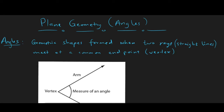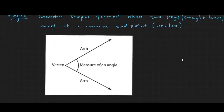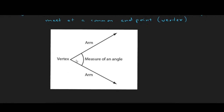In this video, we will look at angles which are part of the bigger topic of plane geometry. By definition, angles are geometric shapes formed when two rays or straight lines meet at a common endpoint called the vertex. As shown in the diagram below, you can see the two rays or lines meeting at a single point called the vertex. We call the measure in between the two arms an angle.